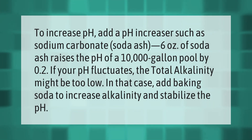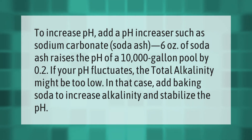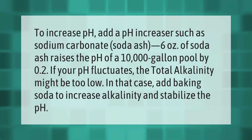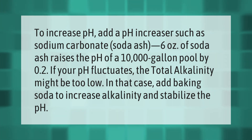To increase pH, add a pH increaser such as sodium carbonate — soda ash. Six ounces of soda ash raises the pH of a 10,000-gallon pool by 0.2. If your pH fluctuates, the total alkalinity might be too low. In that case, add baking soda to increase alkalinity and stabilize the pH.